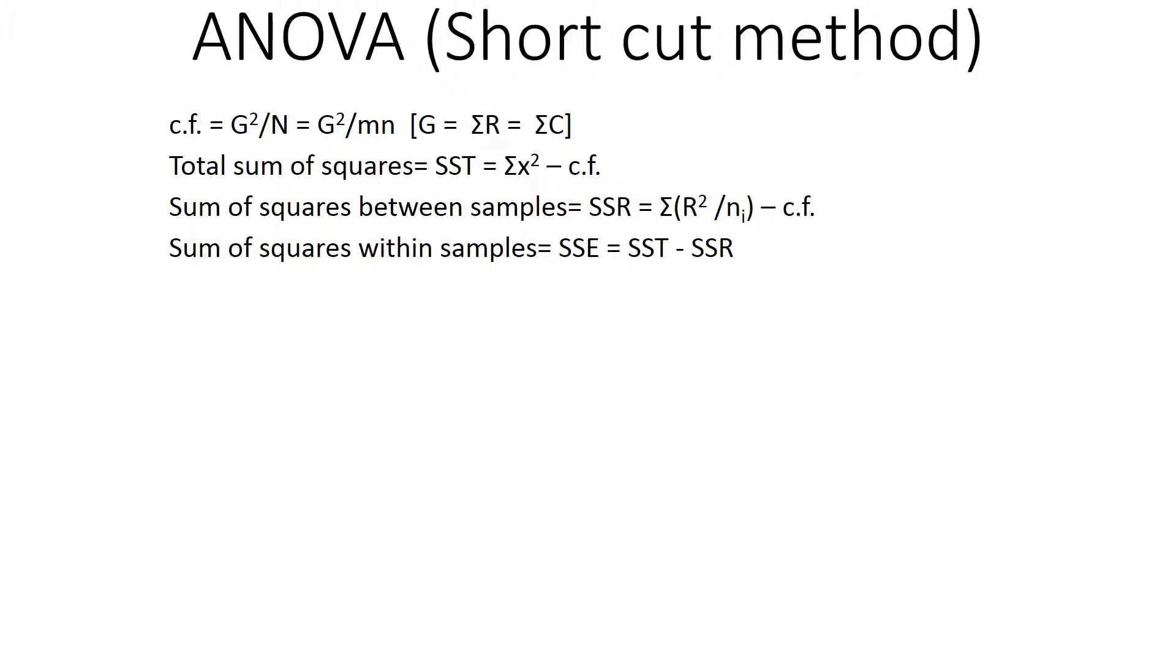Total sum of squares, SST, will be given by summation of x squared minus CF. Summation of x squared means the sum of all terms squared. It's much better than squaring the individual samples and then the individual readings and then adding them up. The total sum, this gives us SST. This is minus the CF value.